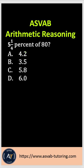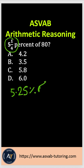In order to solve this problem, first, you have to rewrite 5 and 1/4. So, 5 and 1/4 means 5.25%, of 80.